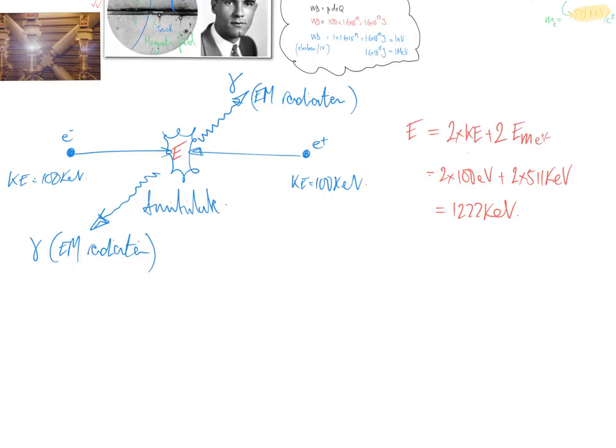Right, what happens next? Well, we have two photons which must carry away the 1222 kiloelectron volts. So, each photon must carry away 611 kiloelectron volts. Okay, I hope that made sense.